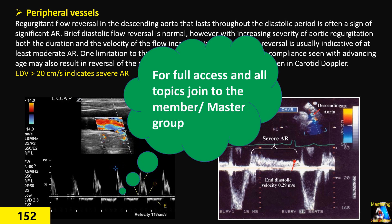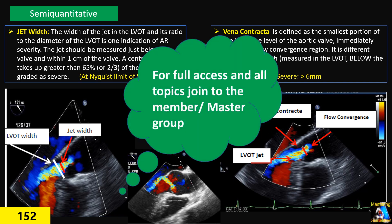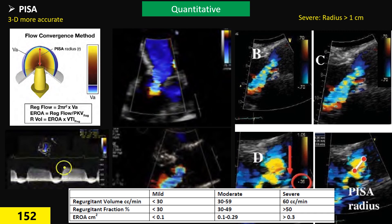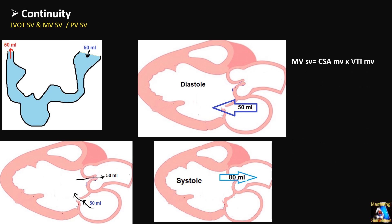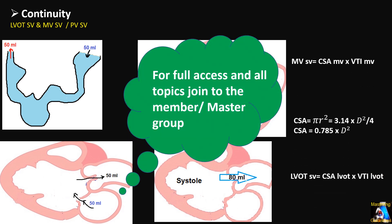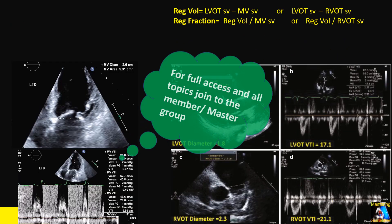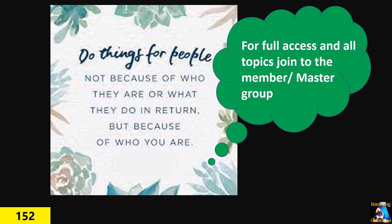We will also cover other findings in peripheral results, semi-quantitative techniques including the PISA or flow convergence method, practical points, the concept of the continuity equation, and how we use it for grading AI or AR — the practical technique and many additional informations.